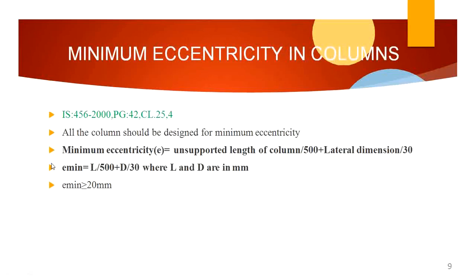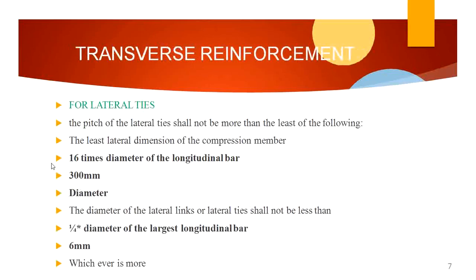These three criteria must be considered for deciding the pitch of transverse reinforcement. For the minimum diameter of transverse reinforcement, the diameter of lateral links or lateral ties shall not be less than one-fourth of the diameter of the largest longitudinal bar or 6 mm, whichever is more. In none of the cases should it be less than 6 mm.